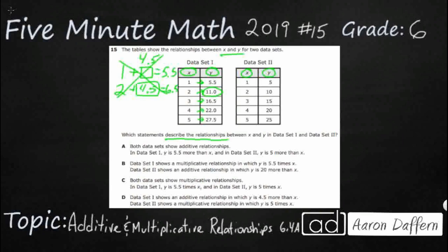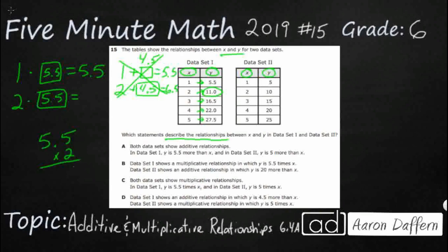So let's try multiplication. 1 times something equals 5.5. Well, 1 times anything is going to be that same number, so it looks like it needs to be 5.5. Let's see if it works on the second row: 2 times 5.5. Let's multiply that — 5.5 times 2 is 11.0. There it is, 11.0. So it looks like it's going to be multiplied by 5.5.